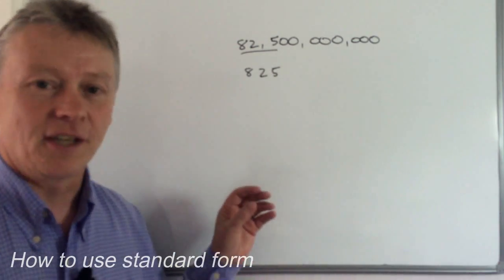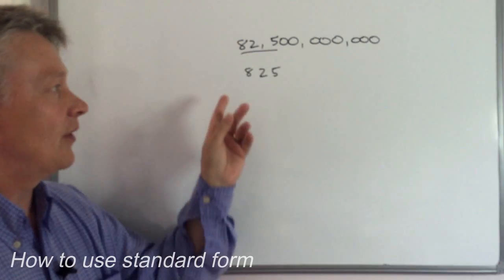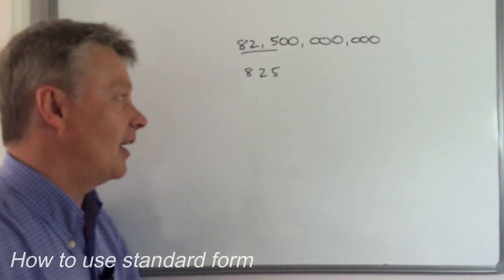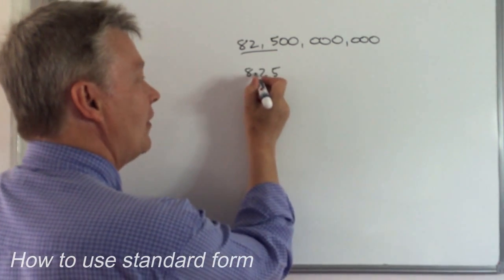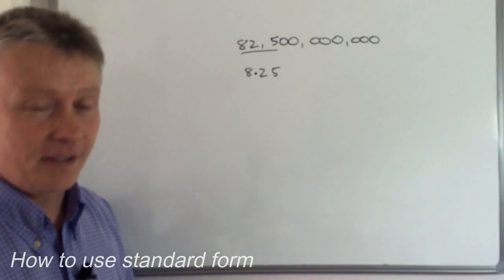And what I need to do is to put the decimal point in such a place that these three digits become between 1 and 10. And I'm going to put that decimal point there. So 8.25 is between 1 and 10.